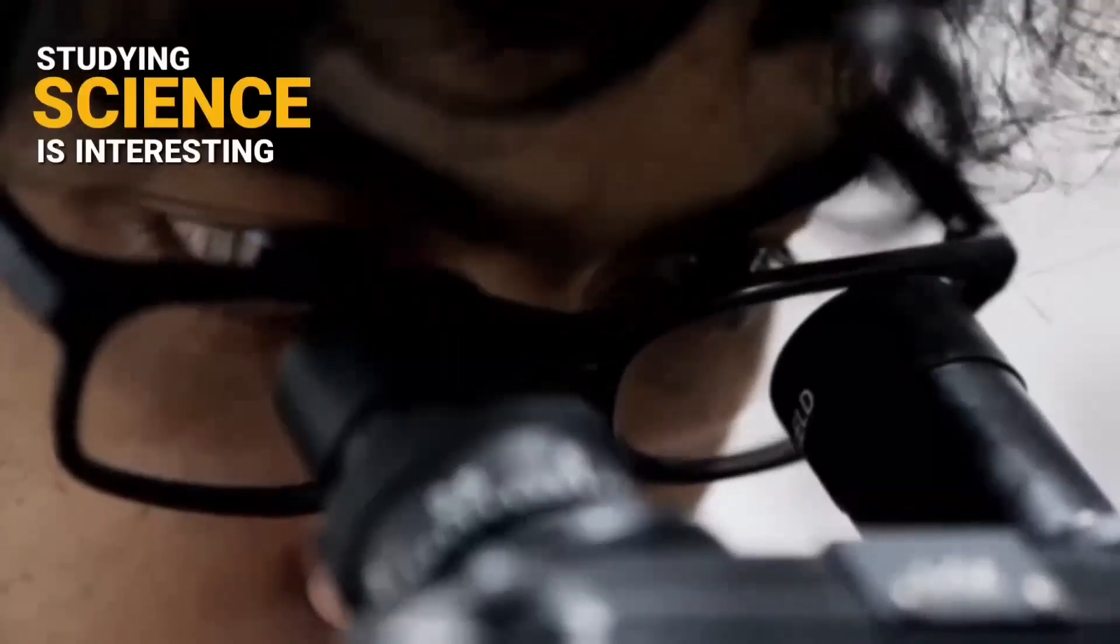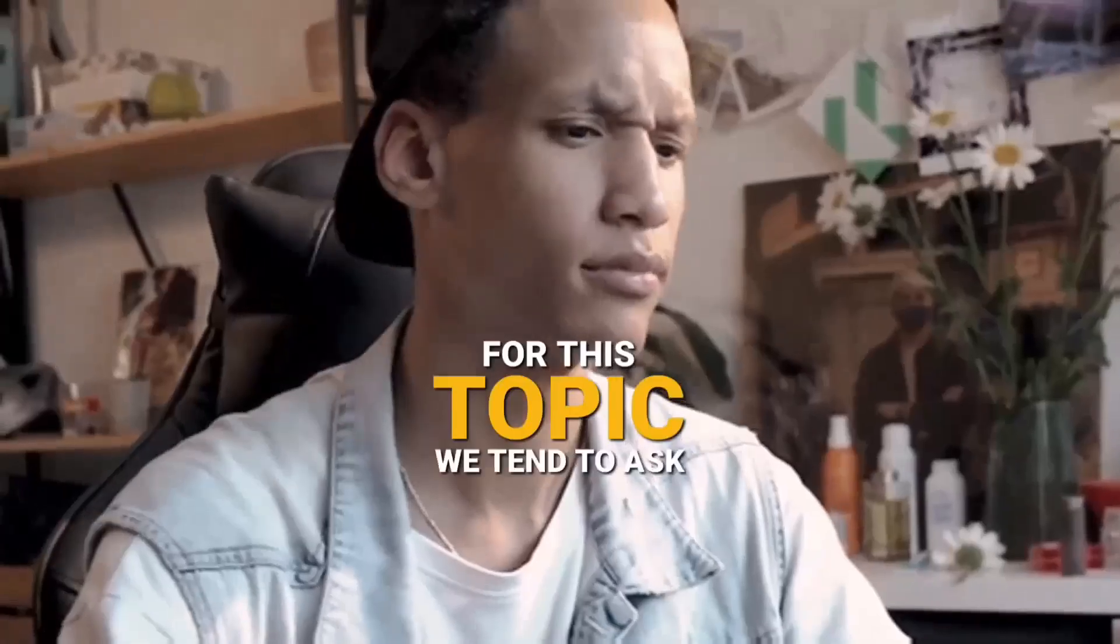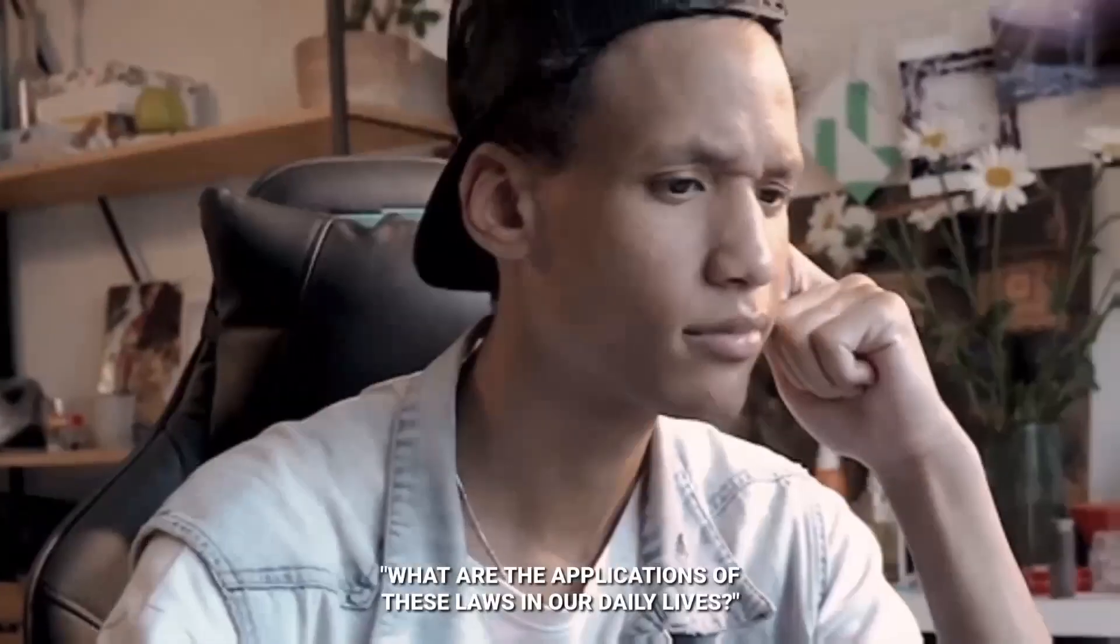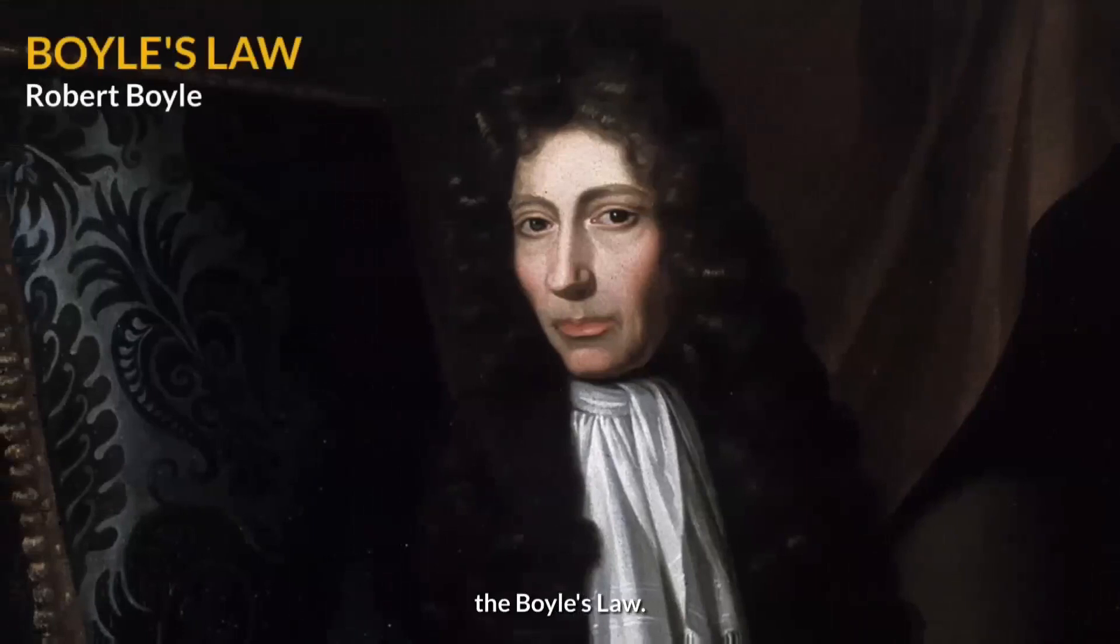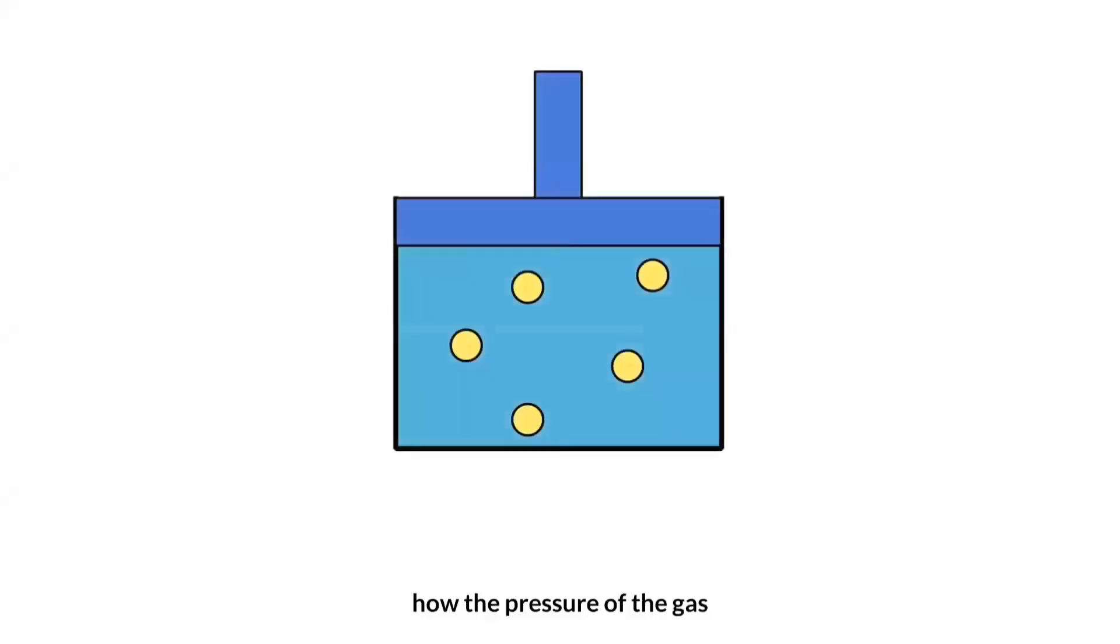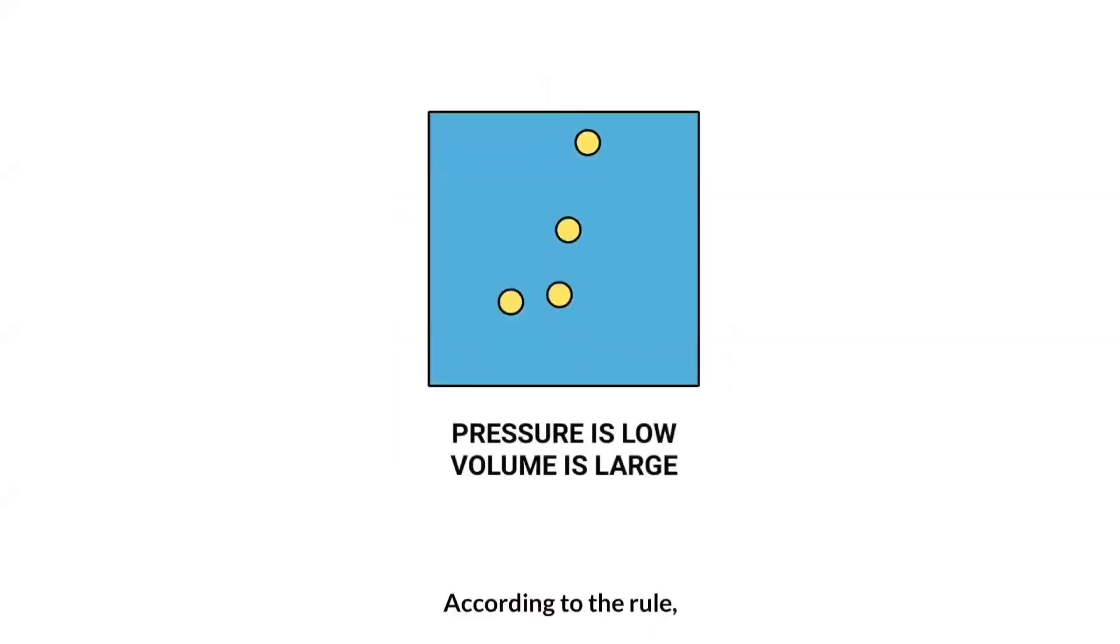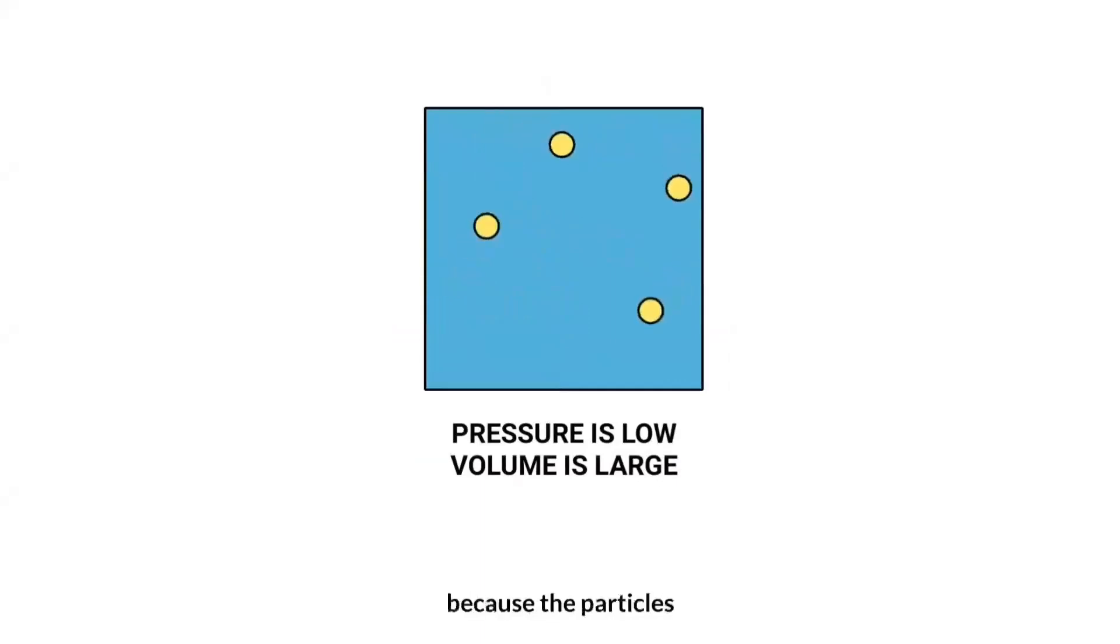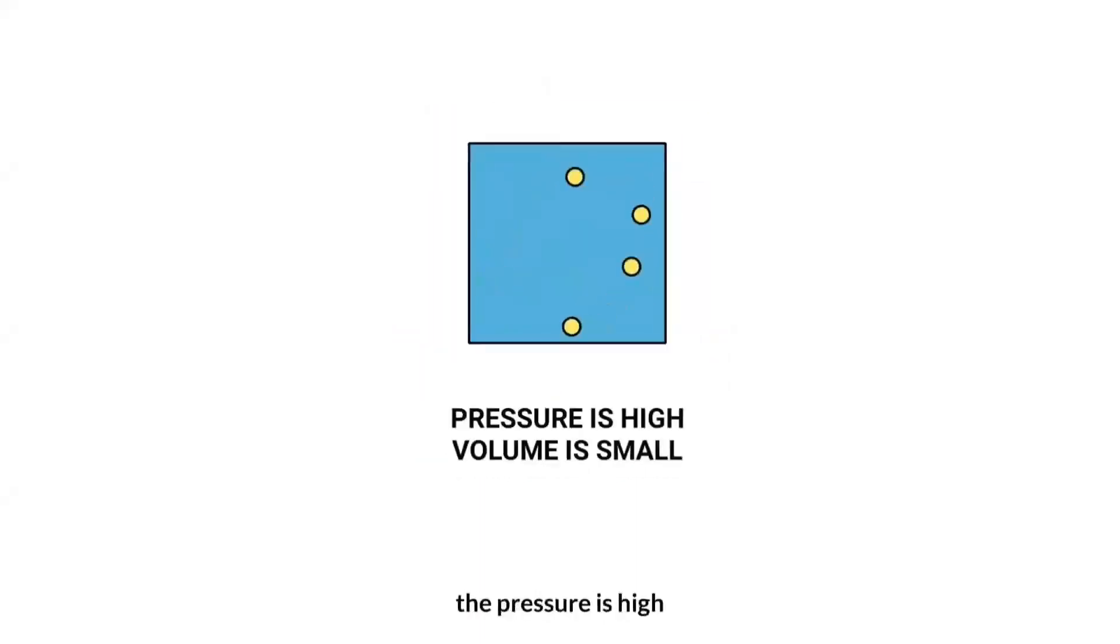Studying science is interesting, and this makes us formulate a lot of questions. For this topic, we tend to ask, what are the applications of these laws in our daily lives? To begin with, we want to talk about Boyle's Law. This describes how the pressure of the gas tends to increase as the volume of the container decreases. According to the rule, if the volume is large, the pressure is low because the particles cannot move quickly because they must move in a large container. On the other hand, if the volume is small, the pressure is high because the particles must move in a smaller container.